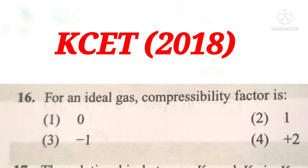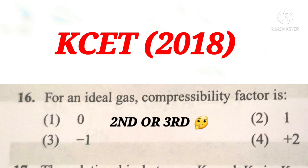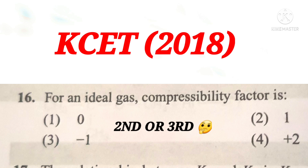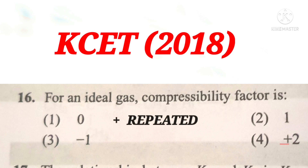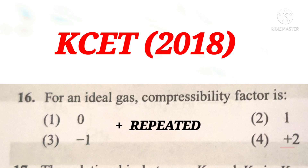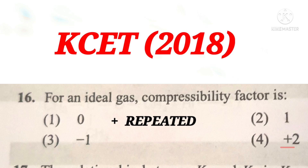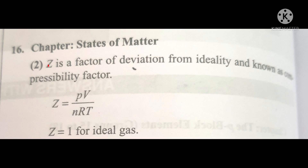In this question, option second and option third can be the answer because the probability of 1 being repeated is more. To decide the correct answer, we take the help of other options. In the other options, plus is being repeated more, so that supports the second option. Therefore, the correct answer will be the second option. You can verify your answer here.